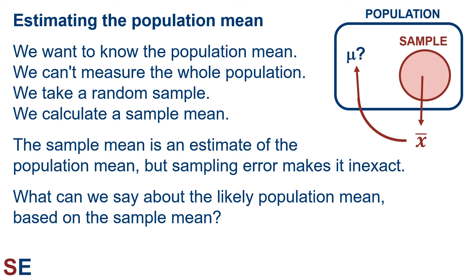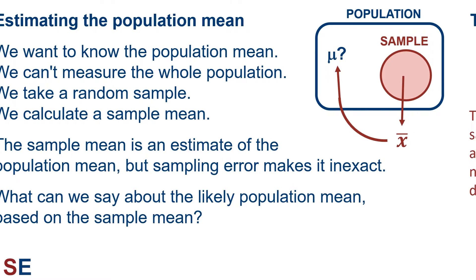So what can we say about the likely population mean based on the sample mean? We know it's probably close, but we also know there's some chance our sample could be very inaccurate. How do we estimate that inaccuracy and create a range where we think the population mean probably is?